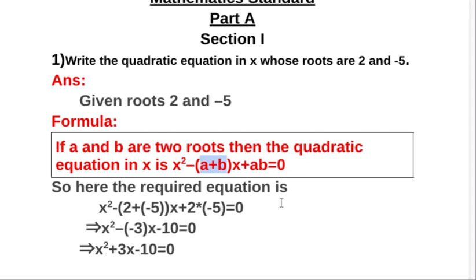So here the required equation is x² minus (2, that is first root, plus minus 5, that is second root) x plus 2 into minus 5, that is first root into second root, equal to 0.